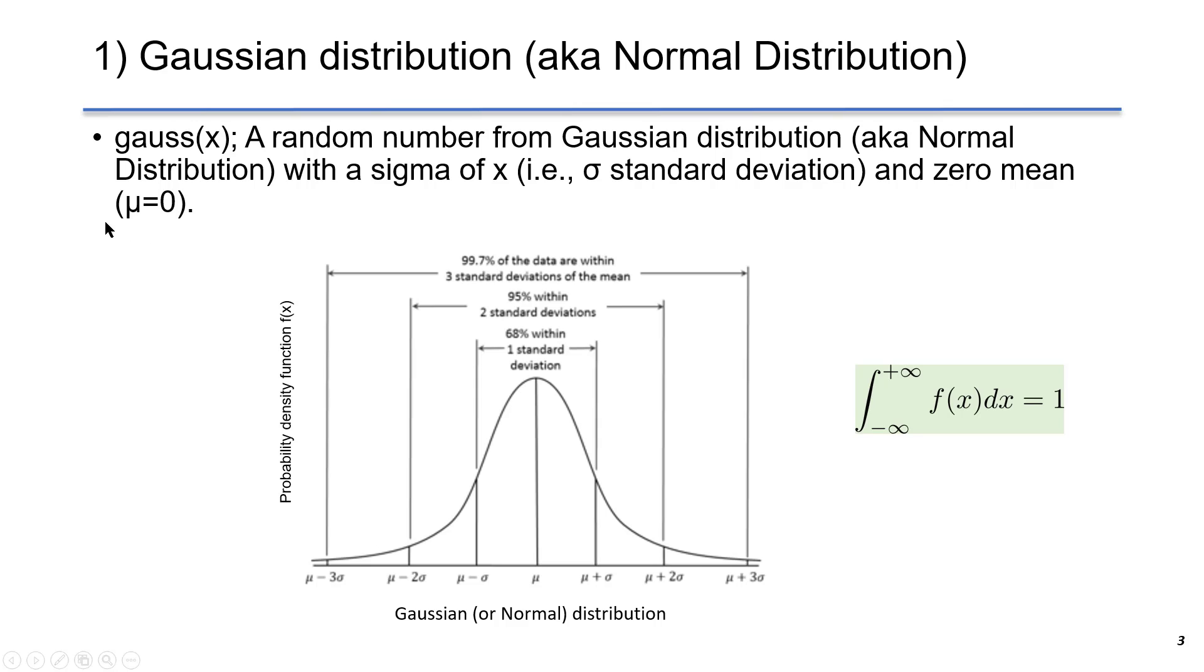And mu is the mean, which is zero in this case. In this figure, the y-axis shows the probability density function and the x-axis shows the data points. This plot tells you the probability of each specific number that is randomly created by the Gaussian distribution.